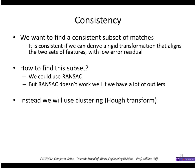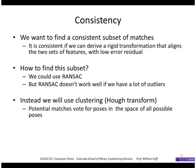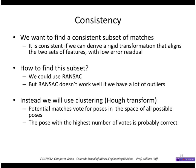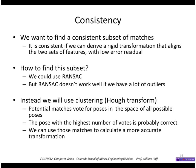Instead, we'll use a clustering technique like a Hough transform. Potential matches will vote for poses in the space of all possible poses, and then we'll look for the bin with the highest number of votes. That will probably be the correct pose we're looking for. We can then refine the transformation using a different technique.